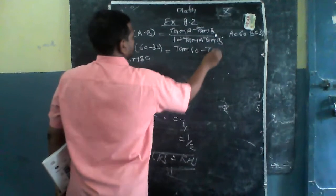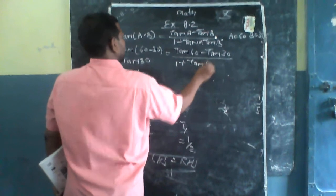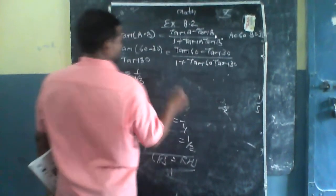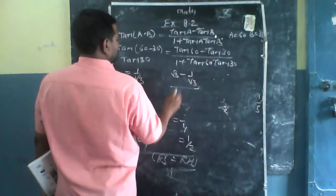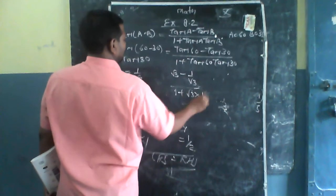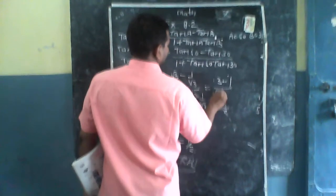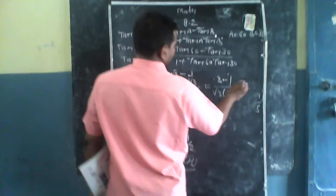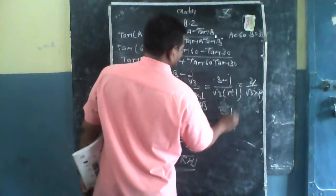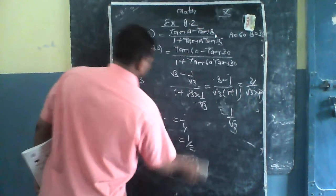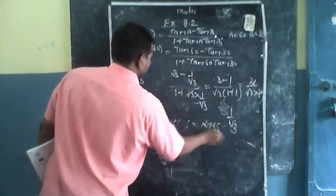RHS में रखेंगे: (tan60 - tan30) / (1 + tan60·tan30) = (√3 - 1/√3) / (1 + √3·1/√3)। √3 और 1/√3 को cut कर देंगे। आएगा (3-1)/√3 / (1+1) = 2/√3 / 2, इसे cut करके 1/√3। LHS = RHS, proof हो गया।